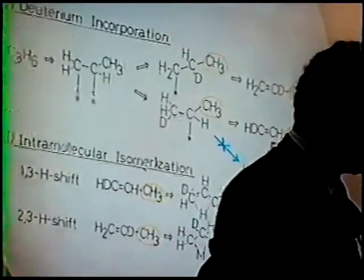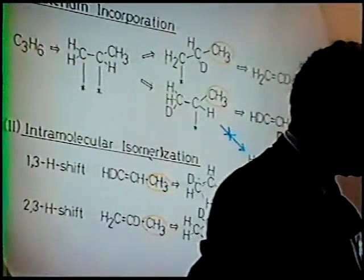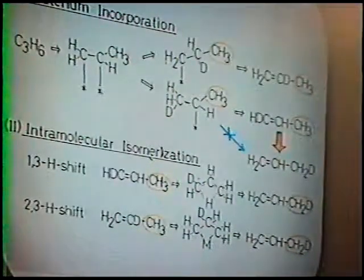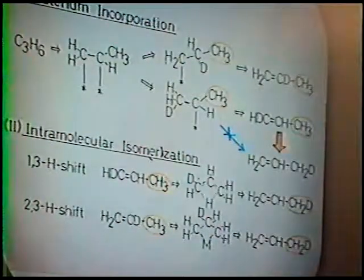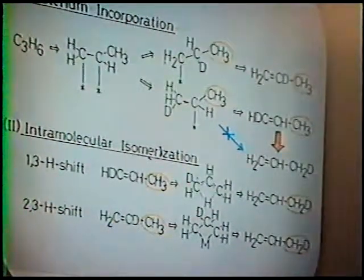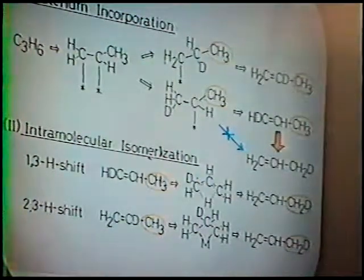In no cases could we propose a concerted reaction mechanism. Deuterium gets into propylene through normal propyl species and also isopropyl species. In the second step, intramolecular isomerization — either a 1,3-H shift or 2,3-H shift — takes place. So by using deuterium and microwave spectroscopy, we can observe such types of reactions. Thank you very much for your attention.